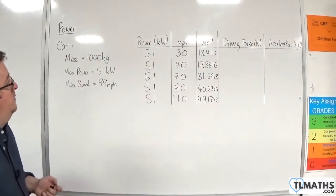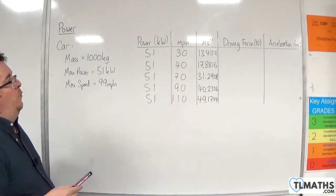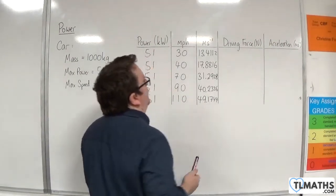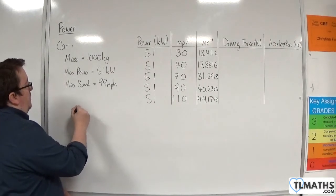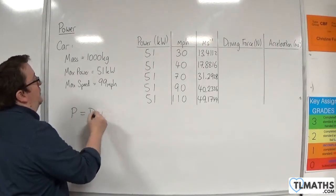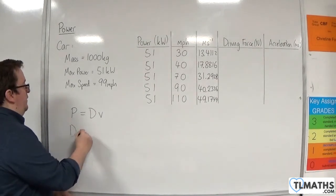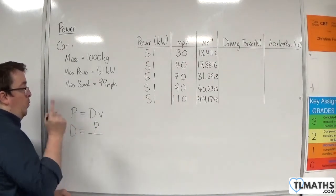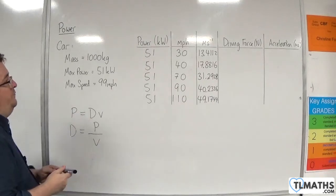Assuming in each of these cases that there are no resistance forces, we can work out the acceleration with the driving force. The driving force, of course - we have that power is equal to the driving force times the velocity. So we can work out the driving force by dividing the power in watts by the velocity.